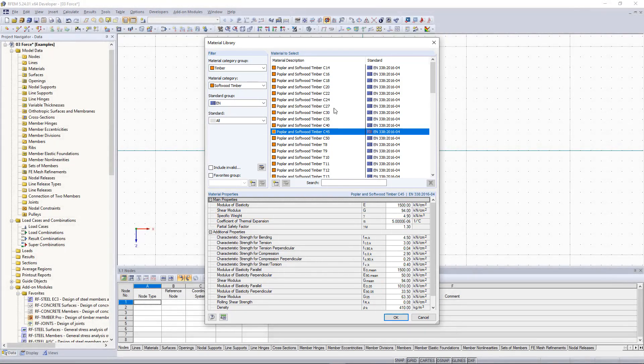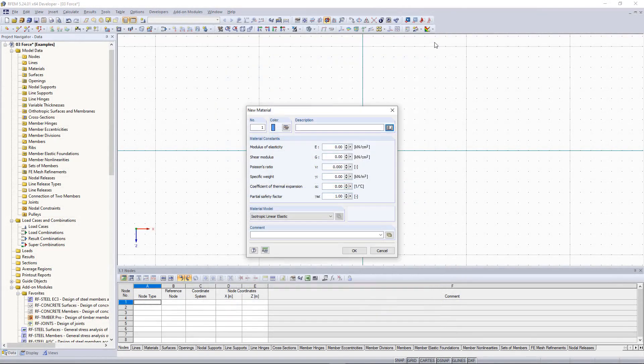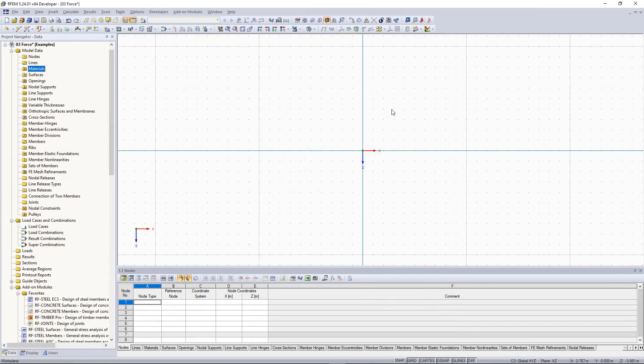But how is the weight of a certain cross section converted into a force? For this, we create a 10 meter long single span beam so that we can evaluate the self-weight.